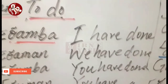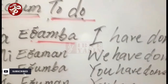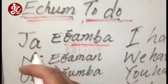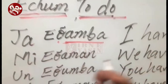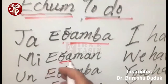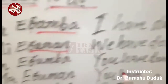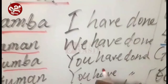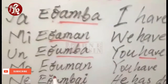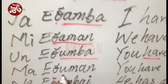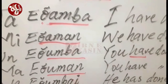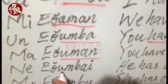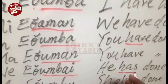So 'I have done' means I have done a course or I have completed graduation — that is 'ja etamba.' 'Mi etaman' — we have done. 'Un etumba' — you have done. 'Ma etaman' — that is also for more than one person, plural: you have done.